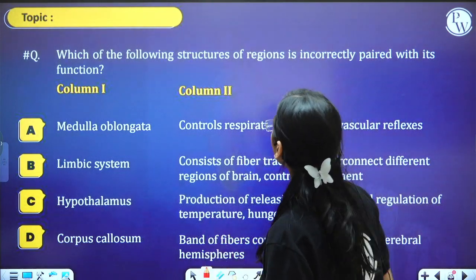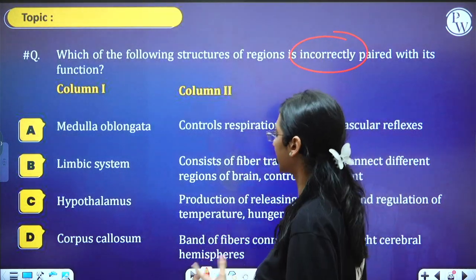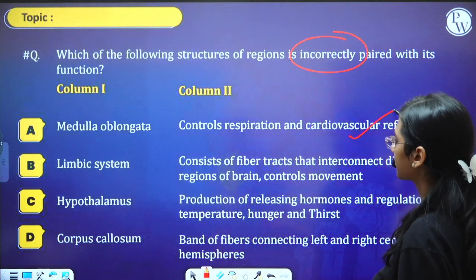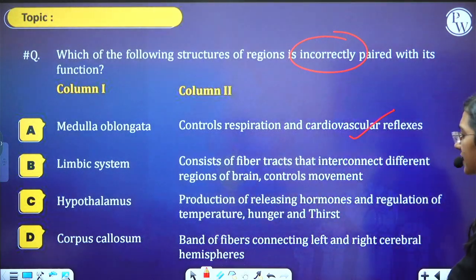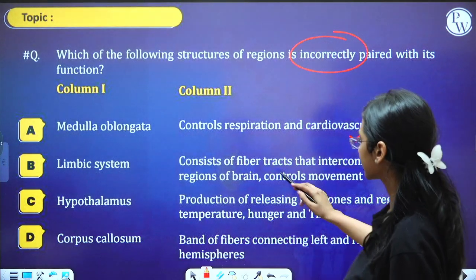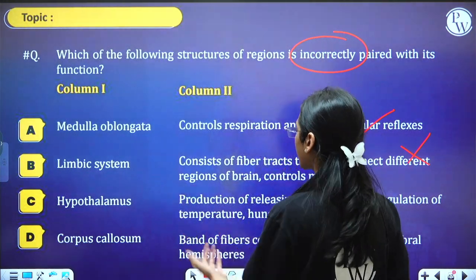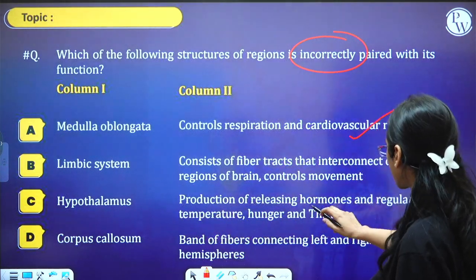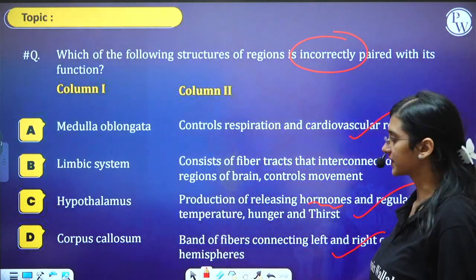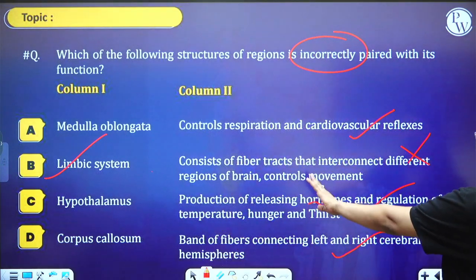Next question: which of the following structures is incorrectly paired? Medulla oblongata — control center for respiration and cardiovascular reflexes, i.e., homeostasis — that is correct. Limbic system — consists of fiber tracts that interconnect different regions — that is wrong, because the limbic system's function is regulation of sexual behavior, excitement, and emotional reactions, not connecting fiber tracts.